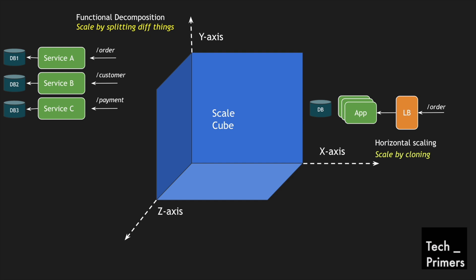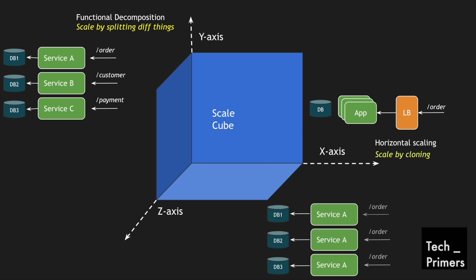Now let's look at the z-axis. Imagine there is service A, but the service A has the same API yet is deployed into multiple instances that connect to different data sets — database one, database two, and database three. Comparing it with the x-axis: in the x-axis we had a single data source and scaled the application but did not scale the database. Here in the z-axis, we have scaled the APIs and the data sets are completely different — we have partitioned the data. This is called data partitioning.